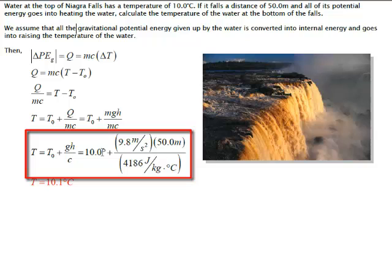We have our initial temperature of 10 degrees Celsius at the top, and then we have each of our values G, H, and C for the specific heat in joules per kilogram times degrees centigrade. So, if we multiply the two terms together in the numerator, divide by the denominator.